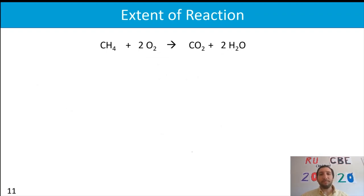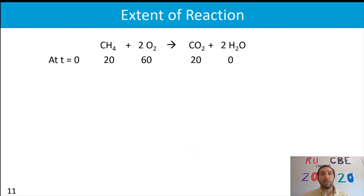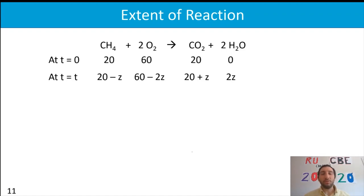We have methane plus O₂ yields CO₂ plus water, with correct stoichiometry. Starting amounts at t=0 are 20 moles of methane, 60 moles of oxygen, 20 moles of carbon dioxide, and no water in the inlet stream. At time t, we use extent of reaction z as our variable. We define z as the amount of methane consumed. For every mole of methane used, two moles of oxygen are consumed (giving a −2z term for O₂), carbon dioxide gains +z, and water gains +2z.